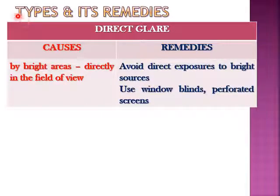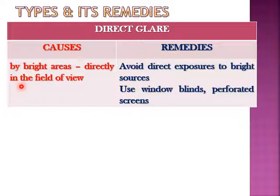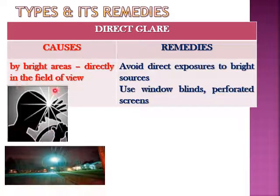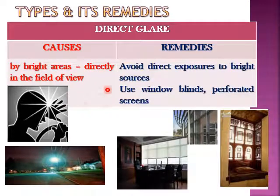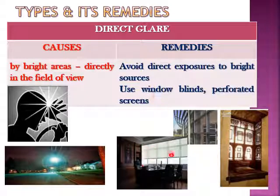Now we will see each type of glare and its remedies. The first type is direct glare, which is caused by bright areas that fall directly in the field of view — for example, sunshine falling on the human eye during driving, or multiple reflections from street lamps. Such glare can be avoided by avoiding direct exposure to bright sources, or by using window blinds or perforated screens.